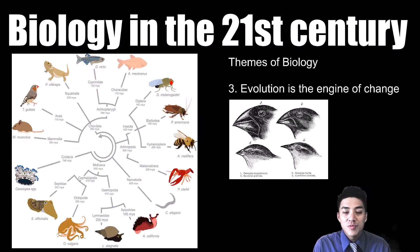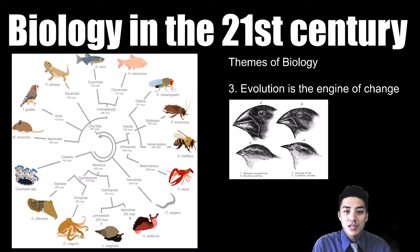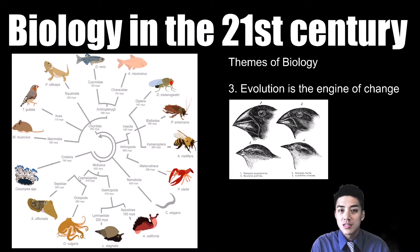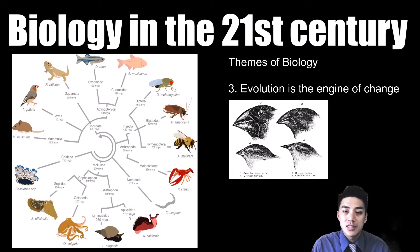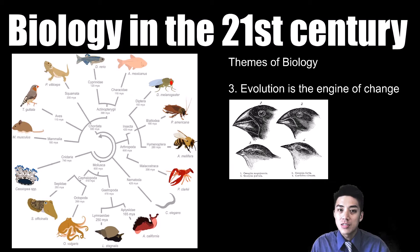The last theme of biology: evolution is the engine of change. What this means is certain advantageous traits that allow an animal to survive tend to be passed on to the next generation. Over many generations, you start to see a species develop and thrive in that environment.